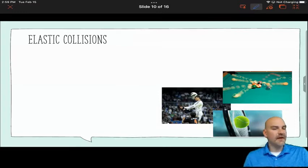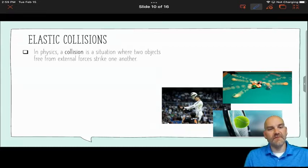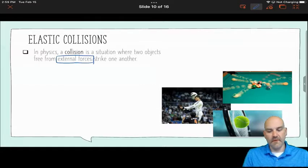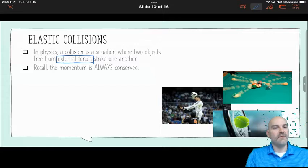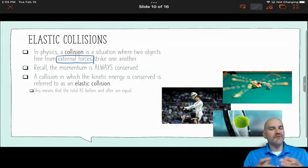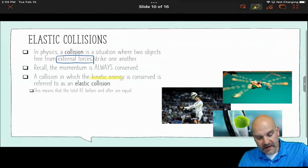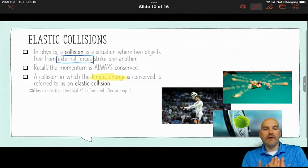And in physics, there's two types of collisions, of which the first one is what we call an elastic collision. So in physics, a collision is a situation where two objects free from external forces strike one another. Again, here's that caveat, right, which really allows us to apply conservation of momentum.